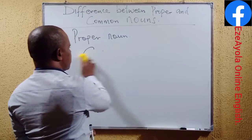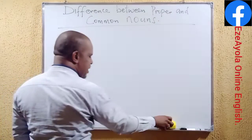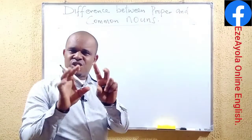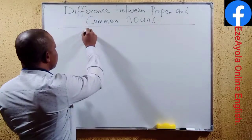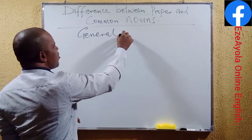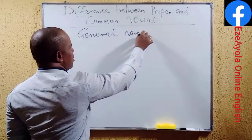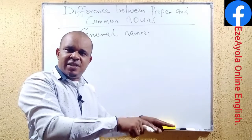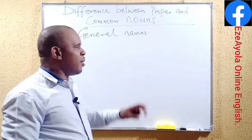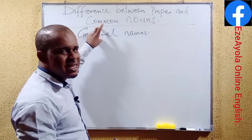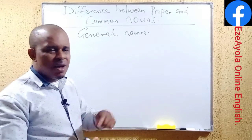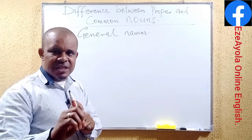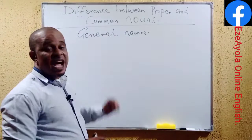What about the common noun? As the name implies, it is common. They are the general names — general names given to the same persons, places, things, or even animals. This is a general name, unlike what we have in proper nouns. Proper nouns are specific, definite, particular names, while common nouns are general names.